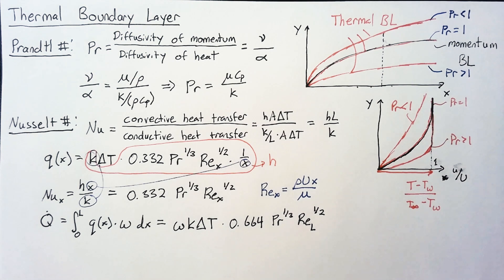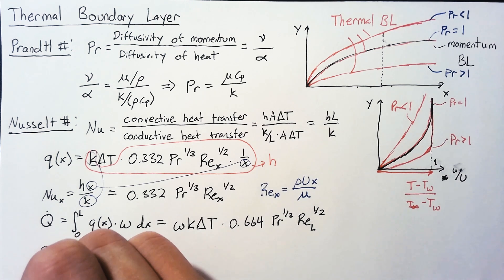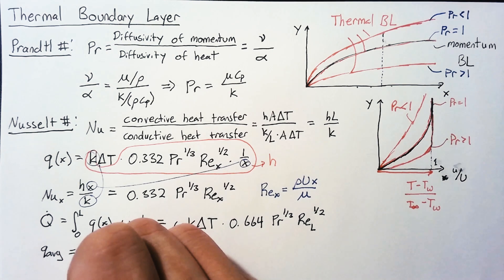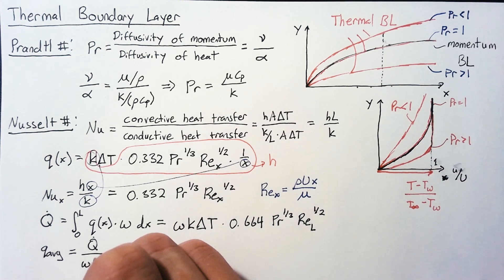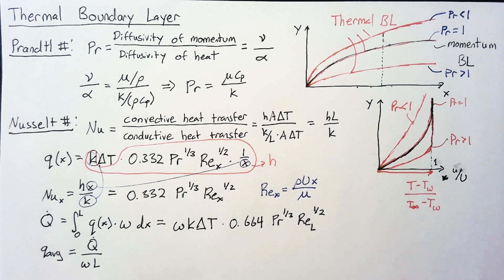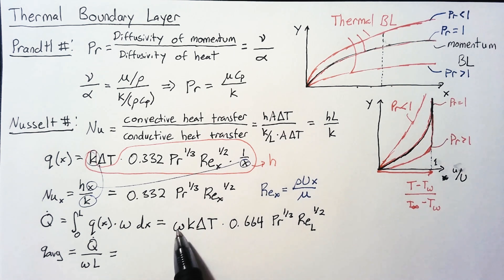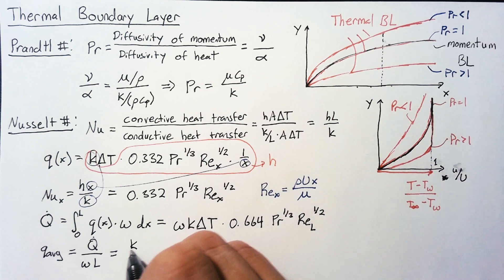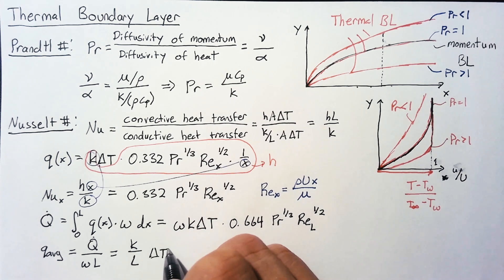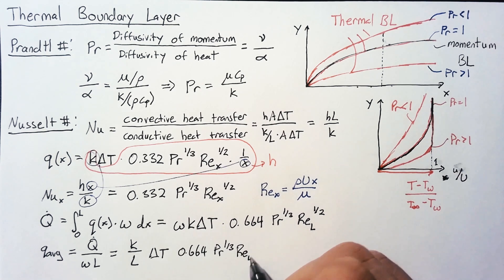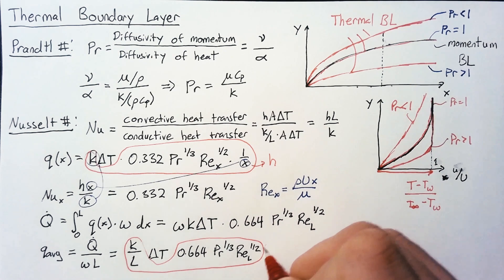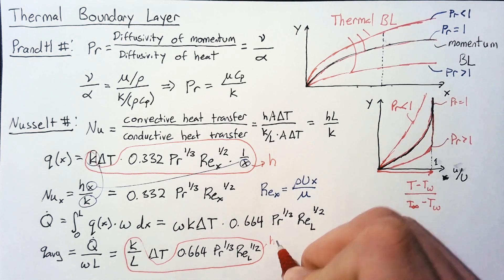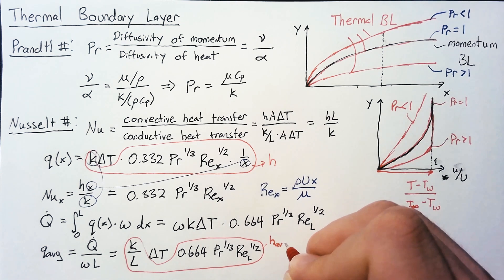We can find an average q. That average q is just going to be our capital Q dot, our total heat transfer divided by the area of our flat plate, which was the width multiplied by the length. The W's will cancel out and we'll end up with K over L multiplied by delta T multiplied by the same term. Everything but this delta T is going to be our heat transfer coefficient, but now we can call this an average heat transfer coefficient.